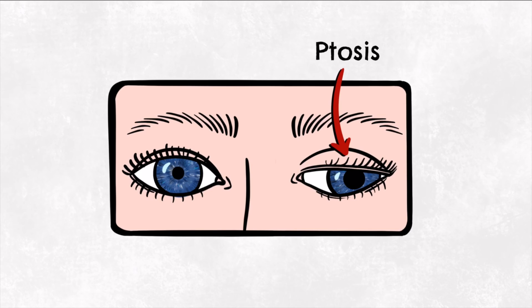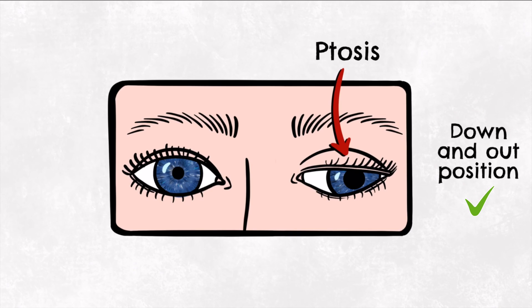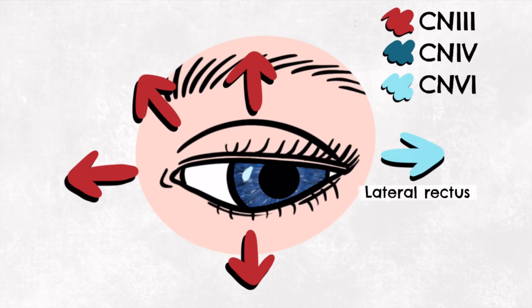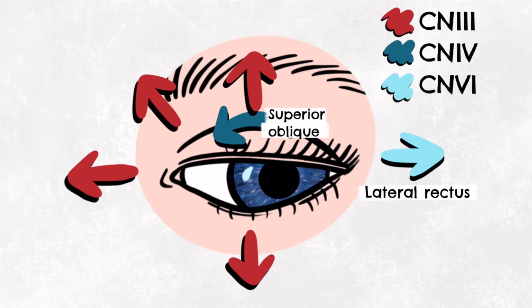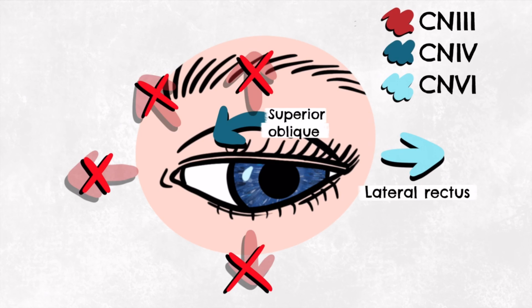The eye is in what's known as a down and out position, and this can be explained by the unopposed action of two muscles — the lateral rectus and the superior oblique — which are known as extraocular muscles. The lateral rectus is innervated by the abducens nerve, giving us a lateral pull or abduction. The superior oblique muscle is innervated by the trochlear nerve, and this is going to depress the eye, offer some abduction, and offer some medial rotation or intorsion, so that the eyeball is down and out in position.